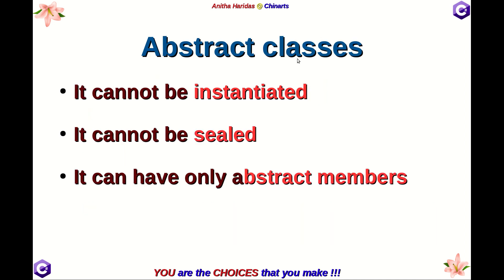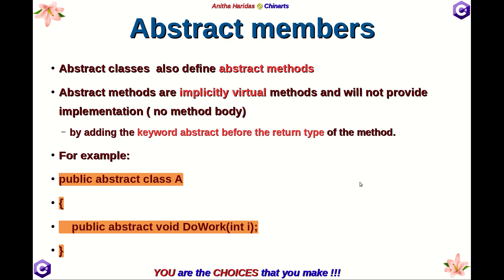Abstract classes cannot be instantiated and cannot be sealed. Sealing means the class cannot be inherited, so abstract classes cannot be declared as sealed. Abstract classes can have only abstract members, all of which are to be re-implemented in the derived classes.